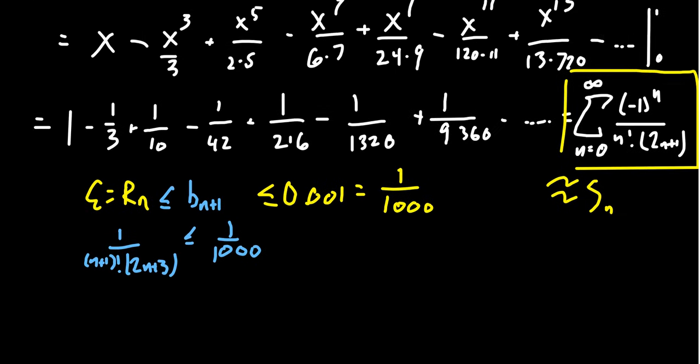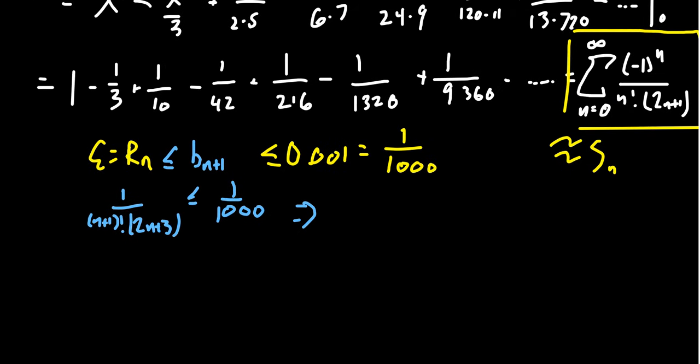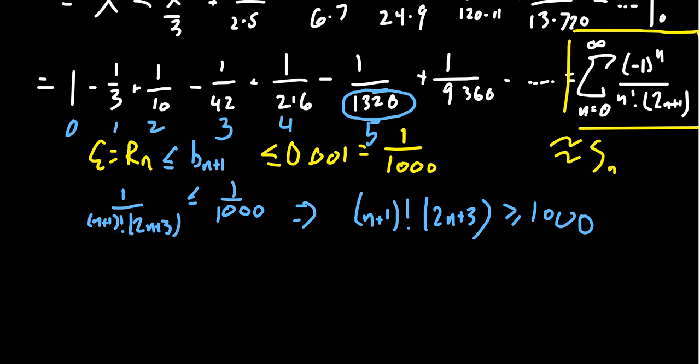The terms of the sequence are going to look like 1 over n plus 1 factorial times 2n plus 3, and we want this to be less than 1 over 1000. Taking reciprocals, we want n plus 1 factorial times 2n plus 3 to be greater than 1000. And so looking at the numbers we've already done here, that happens right here at the fifth stage. We're going to get that n plus 1 needs to be greater than or equal to 5, which says n needs to be greater than or equal to 4.